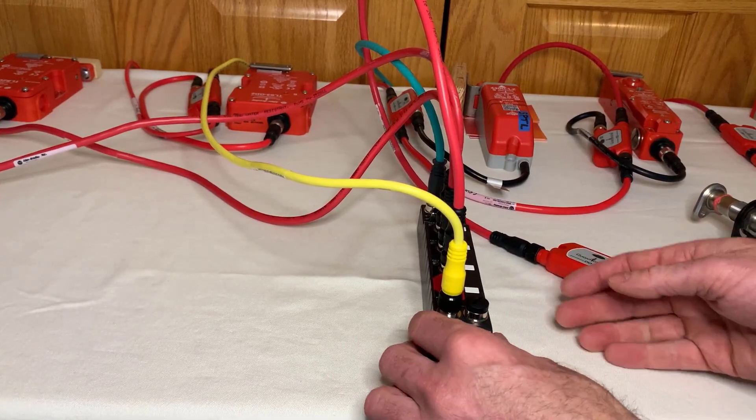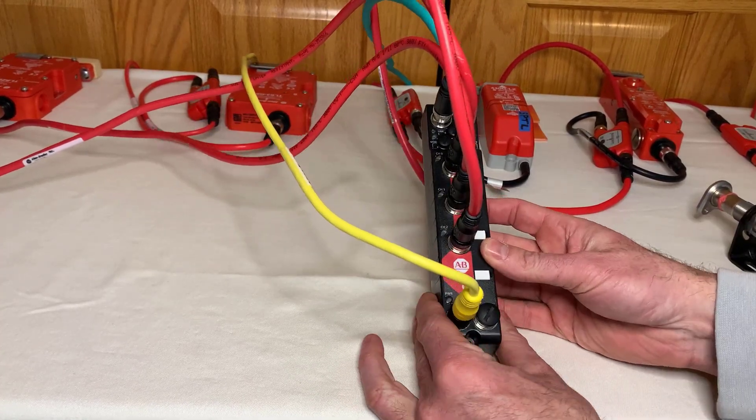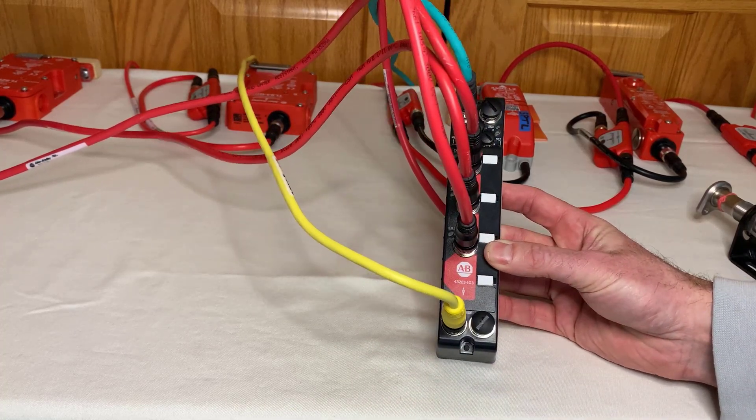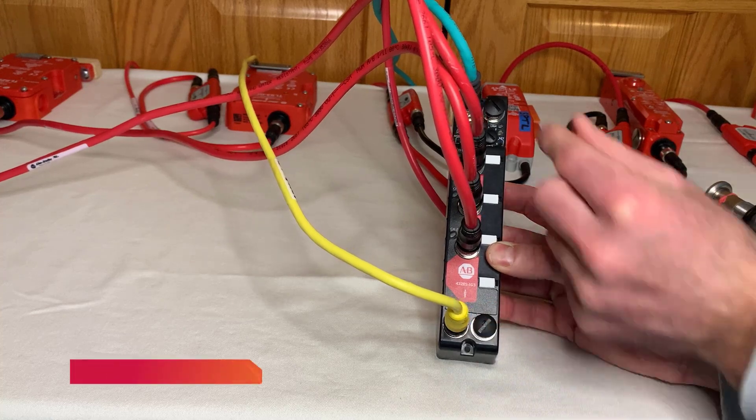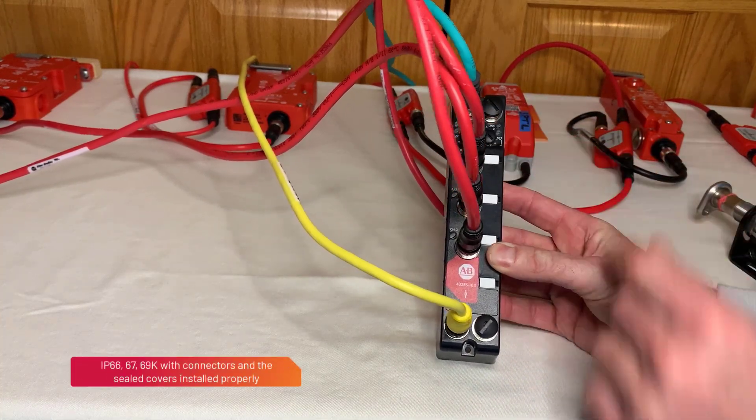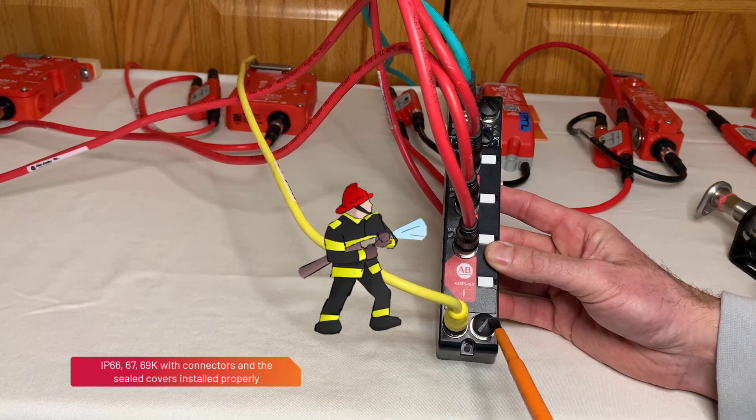When all connections have been made to the GuardLink interface, verify that any unused connections have the caps properly installed to maintain the IP66, 67, and even the IP69 rating of the module. Maybe later we can test the module with some high-pressure water.